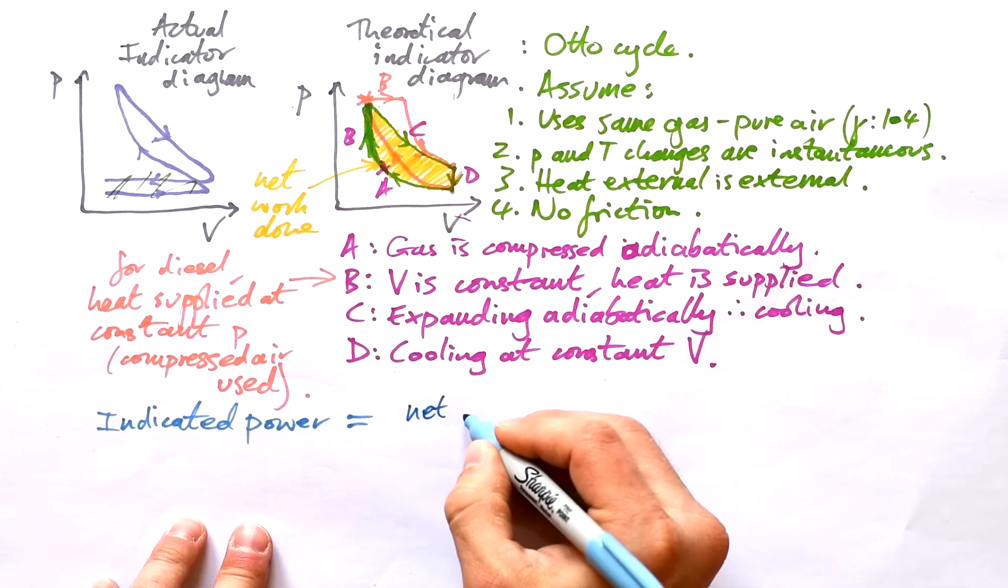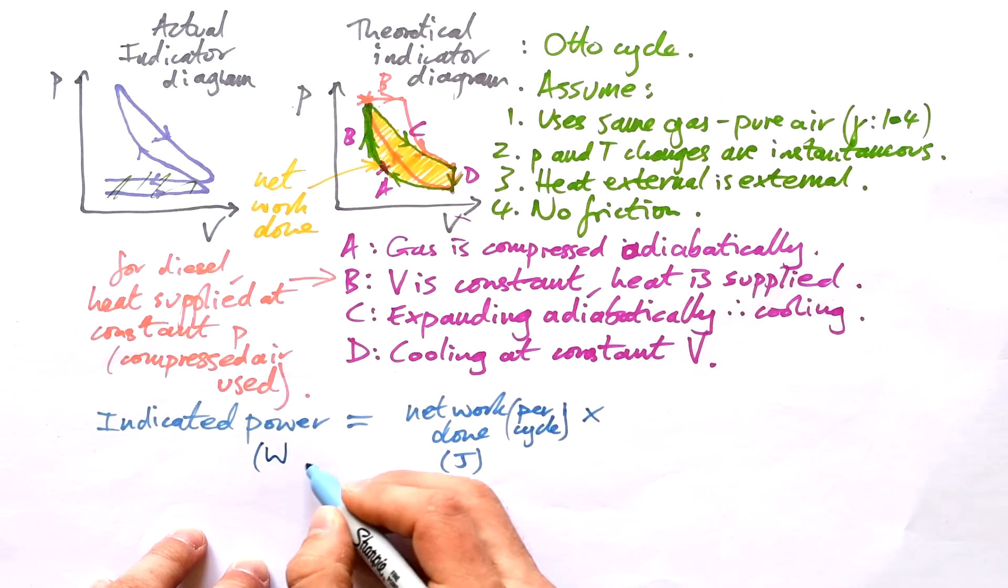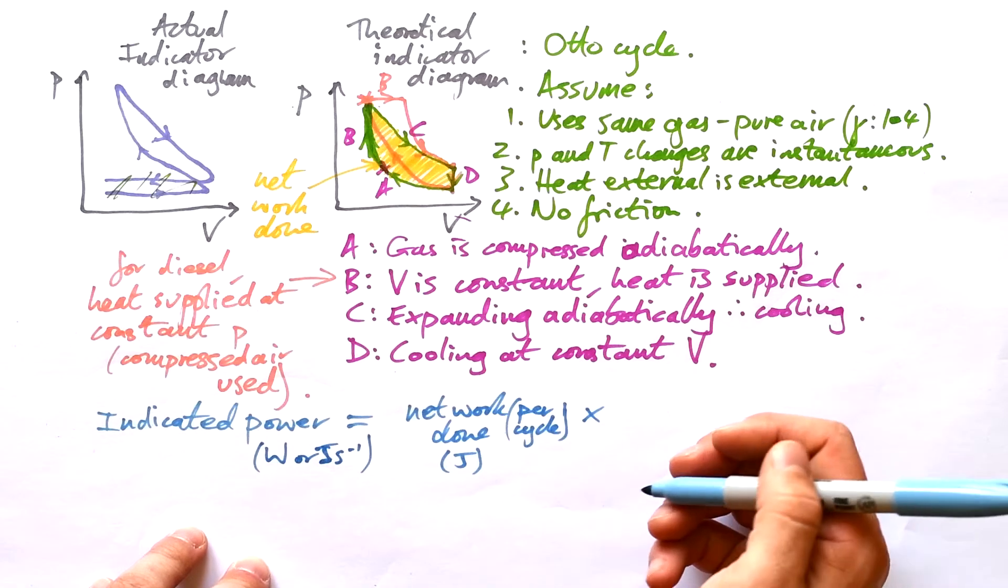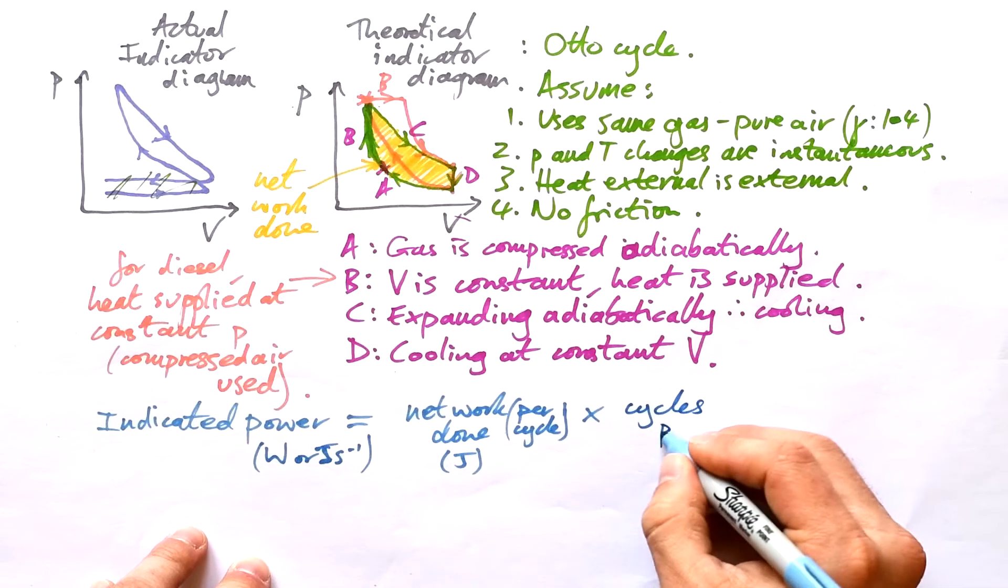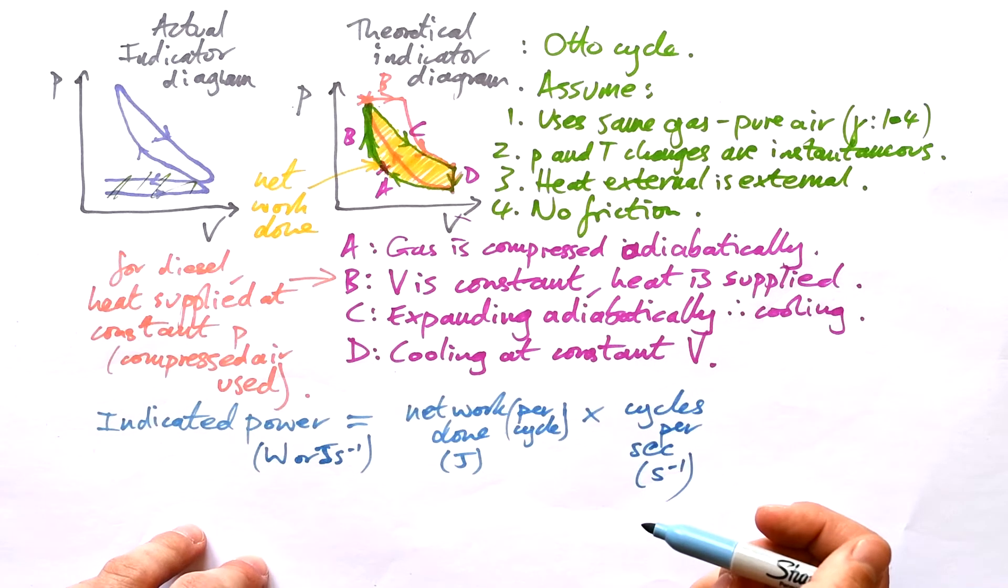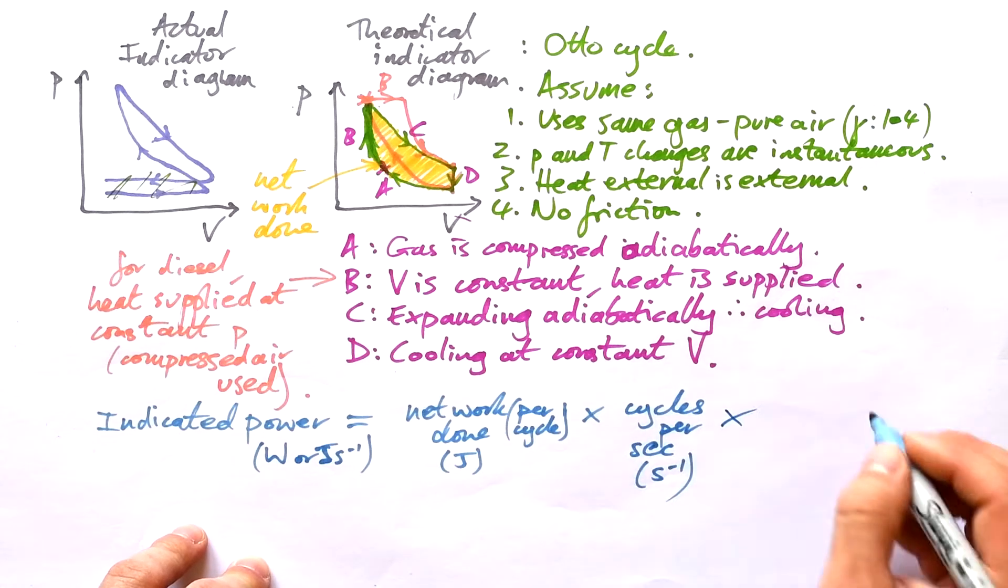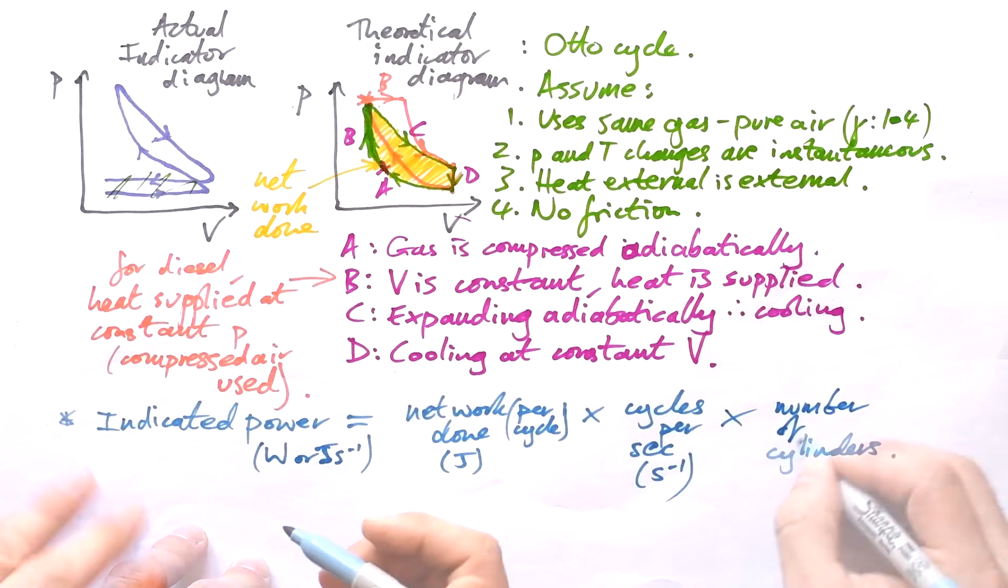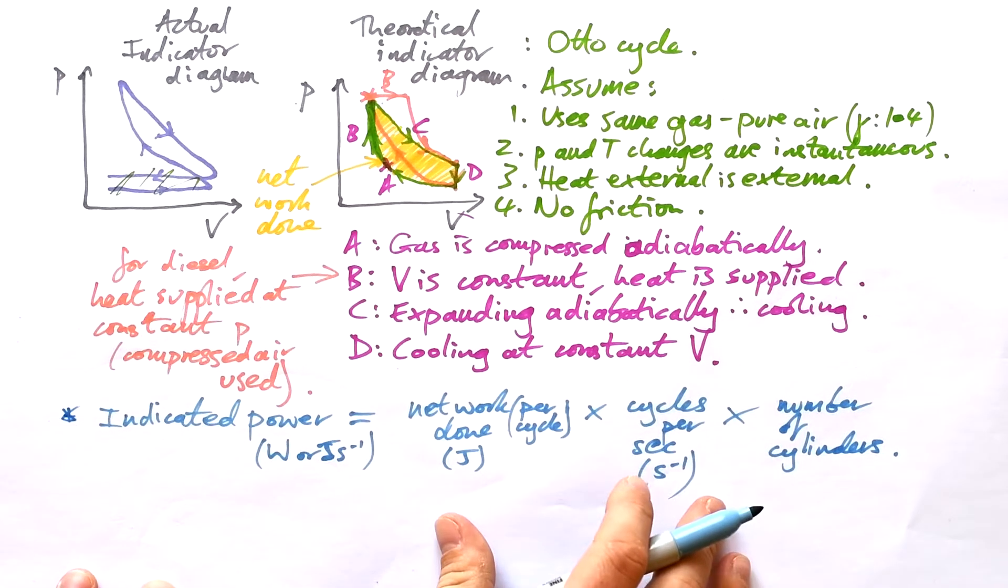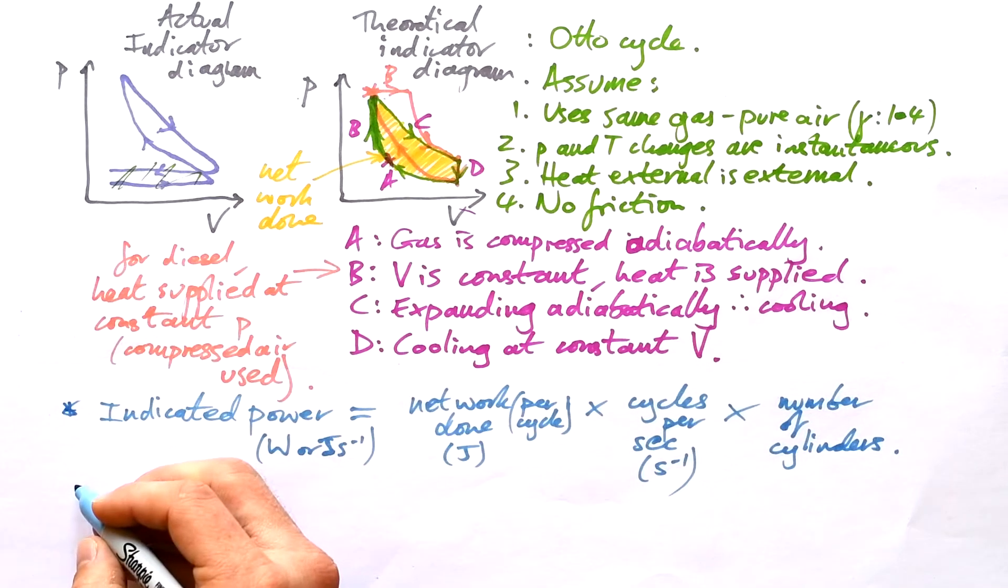And so we want to know what indicated power is. And so that's going to be equal to the net work done per cycle. But we know that if indicated power is watts or joules per second, then we need to find out how many of these are done per second. And so that's going to be times cycles per second. If you have, say, a four or six cylinder engine, then we know that we're just going to multiply by this as well. So number of cylinders in the engine. So we can say that that is almost the power going into the engine. It's not quite as simple as that, but we'll get onto that in a minute.